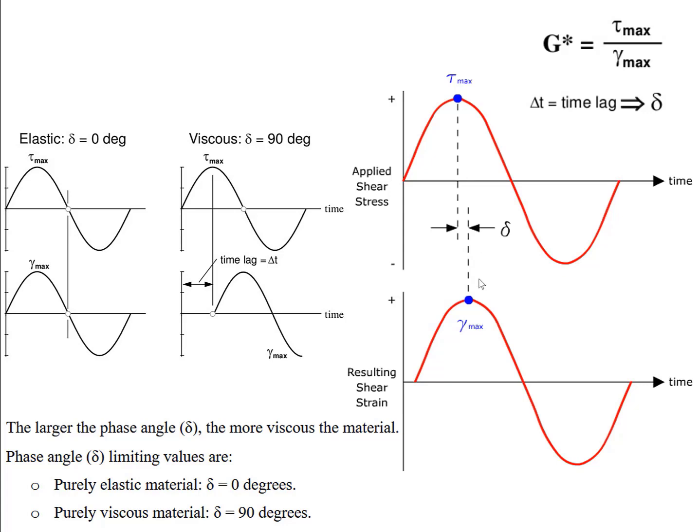The complex shear modulus G* can be considered as the sample's total resistance to deformation when the sample is repeatedly sheared. The phase angle delta is the lag between the applied shear stress and the resulting shear strain. The higher the shear modulus, the stiffer the sample is, which means it is more able to resist deformation. The larger the phase angle, the more viscous the material is. The phase angle delta has two limiting values: zero degrees when the material is purely elastic, and 90 degrees when the material is purely viscous.